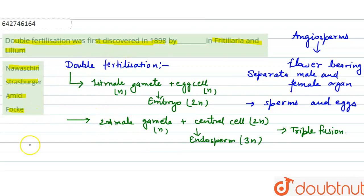So this is discovered by option A, that is Navashin in 1898 in Fritillaria and Lilium. So our right answer for the question is A.